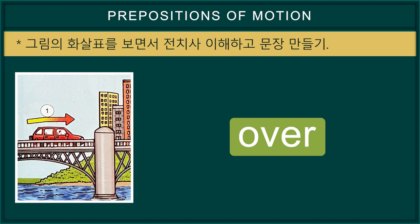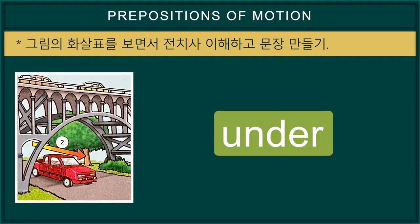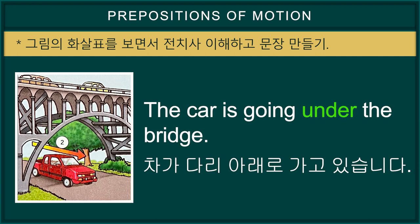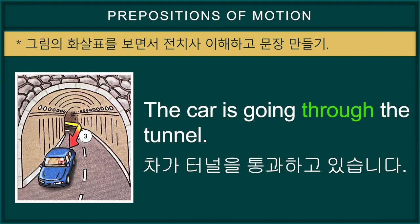Over — the car is going over the bridge. Under — the car is going under the bridge. Through — the car is going through the tunnel.